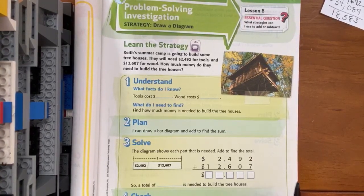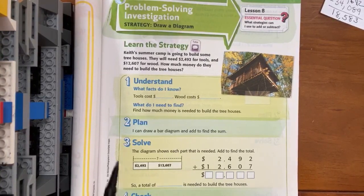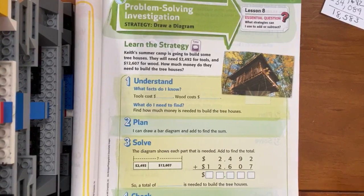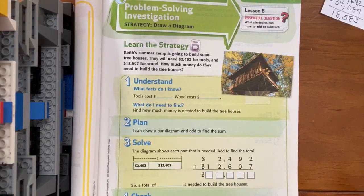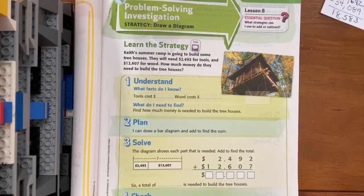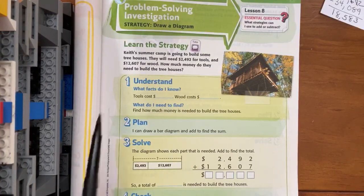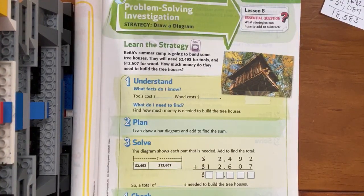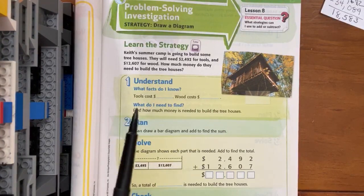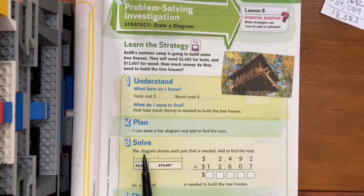In this lesson, lesson 8 of chapter 2, we're going to work on the problem-solving pages. Our strategy is to draw a diagram. In chapter 1, our strategy was the four-step plan. Now that we understand the four-step plan, we're going to start incorporating different strategies into helping us solve problems.